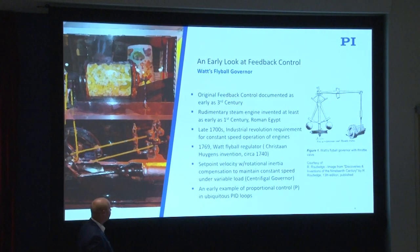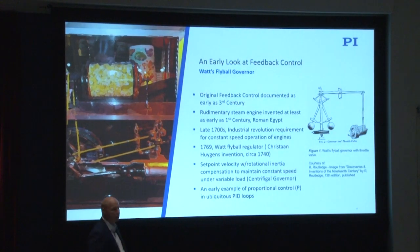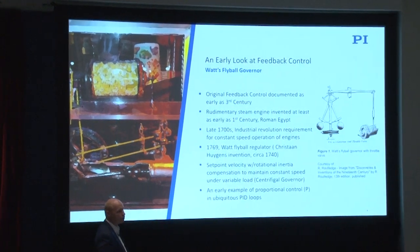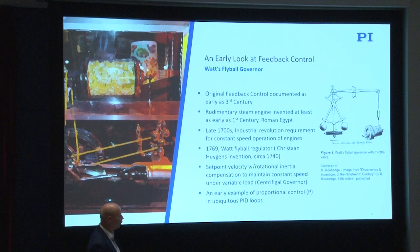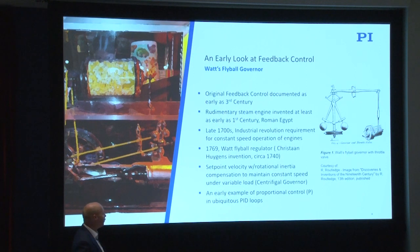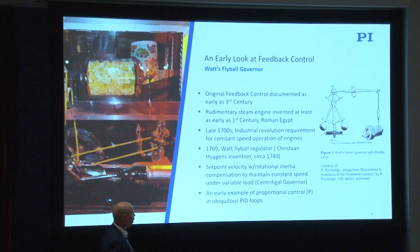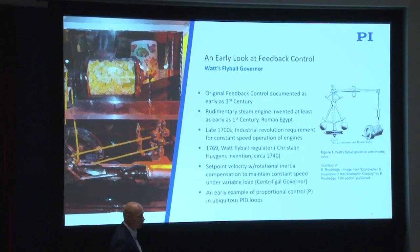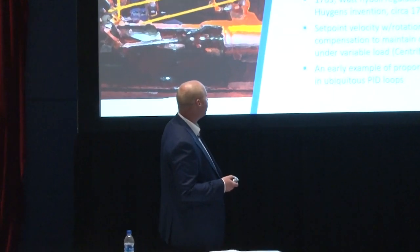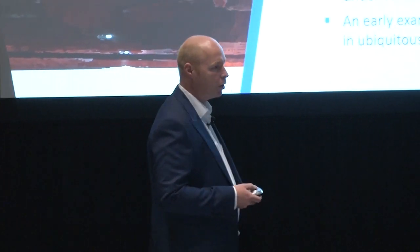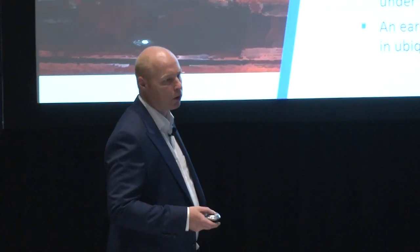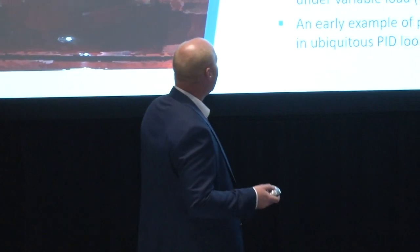Even earlier, in the 1st century Roman Egypt, there was a crude invention of a steam engine — a steam turbine. Eventually, when the British decided to have an industrial revolution in the late 1700s, there was a need for constant speed operation of steam engines. A very clever Dutch inventor called Christiaan Huygens, who also invented the pendulum clock, had an idea that James Watt — a Scot, though we call him British — took forward.